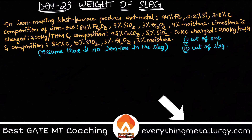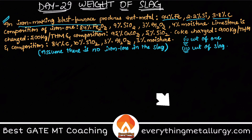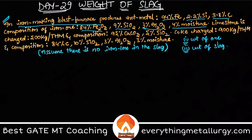Today I will directly explain with an example. This is a worked example from the Tan Lily book. The question is about an iron-making blast furnace that produces hot metal with the composition: 94% Fe, 2.2% Si, and 3.8% carbon. The composition of iron ore is given as 84% Fe2O3, 9% SiO2, 3% Al2O3.